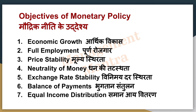अब monetary policy के objectives आते हैं। पहला है economic growth — आप goods और services के production को कैसे increase कर सकते हैं। अगर ज़्यादा loan दिया जाए तो ज़्यादा production और services मिलेंगी, economy की growth होगी, business का profit बढ़ेगा। दूसरा है full employment — जहाँ labor sources effectively available हों, skilled और unskilled दोनों को employment मिले। अगर businesses के पास loan होगा, पैसे होंगे, तो वो ज़्यादा लोगों को रखेंगे, जिससे full employment होगा। तीसरा है price stability — general price level को stable बनाए रखना, inflation और deflation नहीं होनी चाहिए, balance होना चाहिए, और money की supply demand के according हो ताकि price equilibrium level तक पहुंचे।